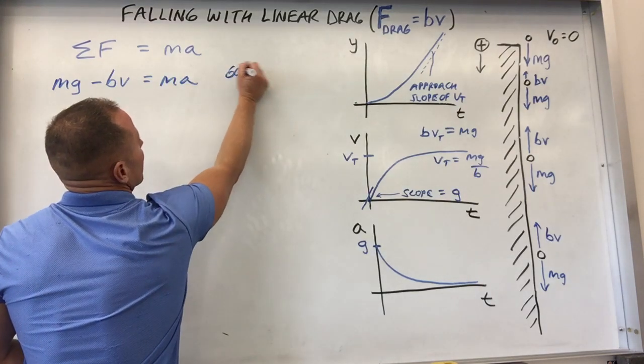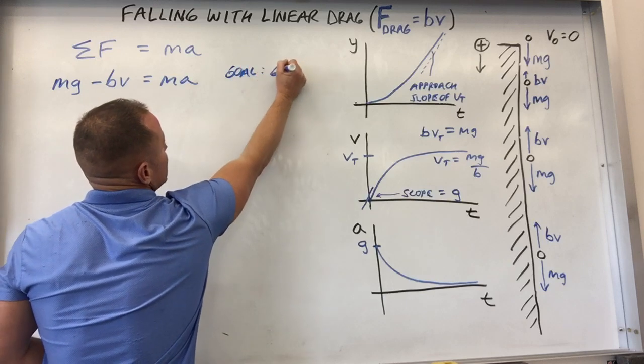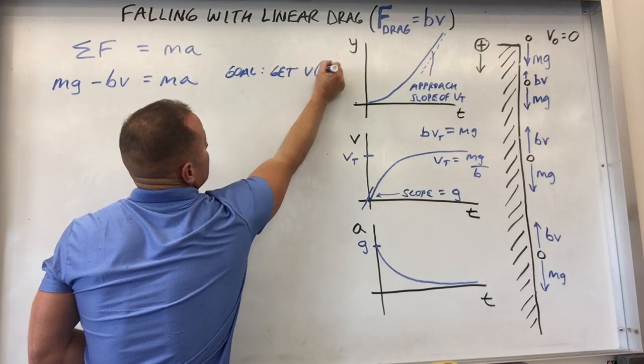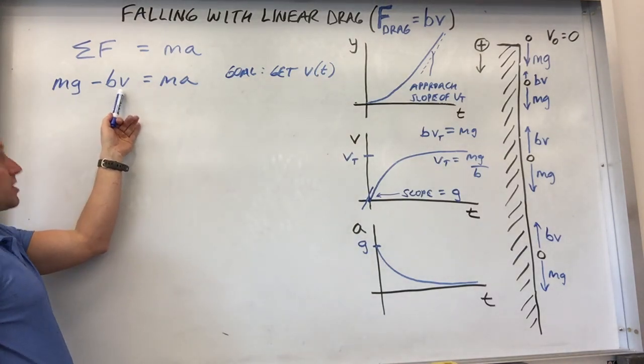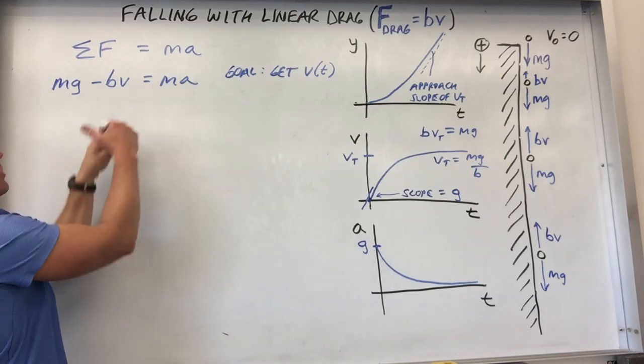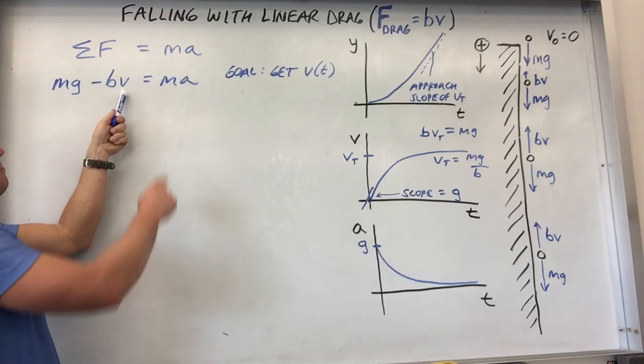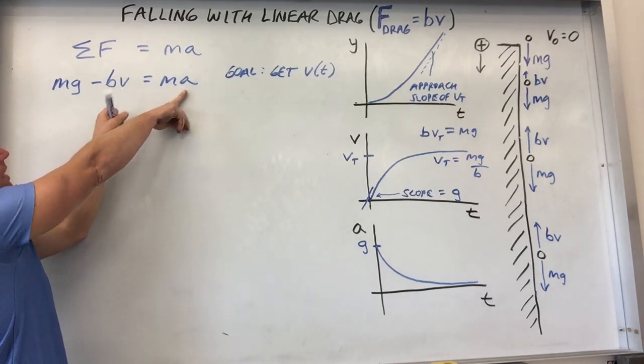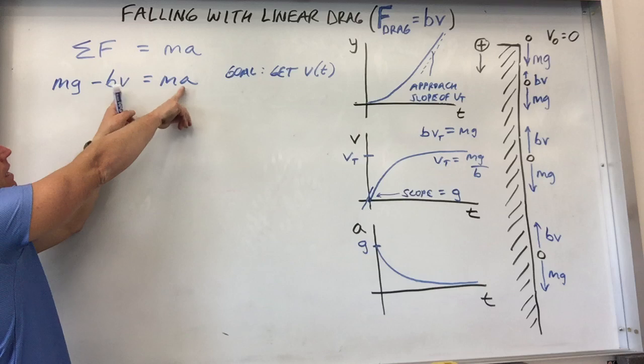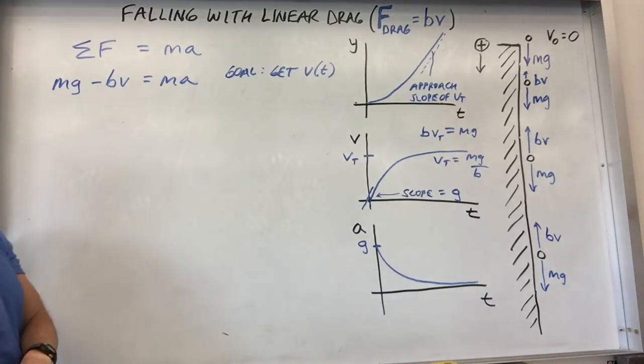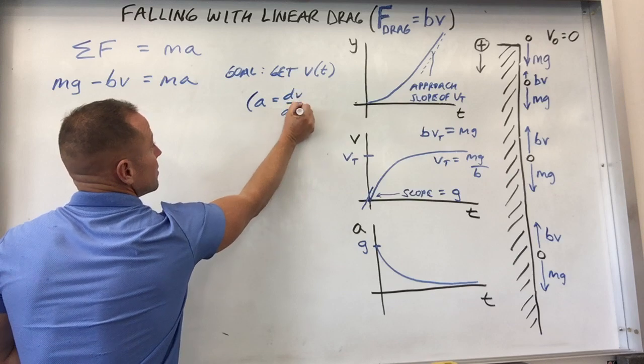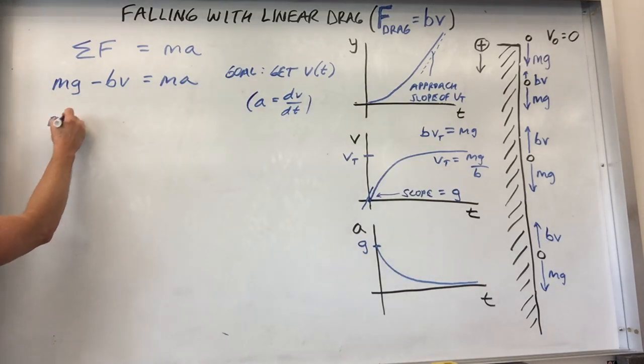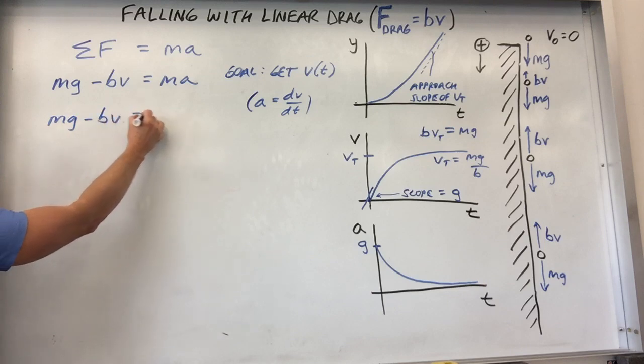Well, as this thing's falling down, let's take positive direction to be down since that's which way it's going. We'll say we have mg in the positive direction and bv is in the negative direction. And then that's going to be equal to ma. What we'll do here is we'll just set a goal of getting V of t, the velocity as a function of time. Now, the issue you have here is the velocity is changing with time, but so is the acceleration. So we basically have two variables that are changing with time.